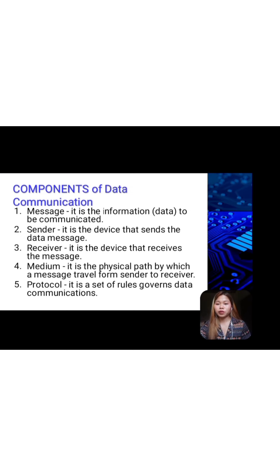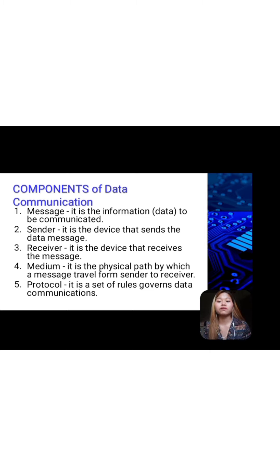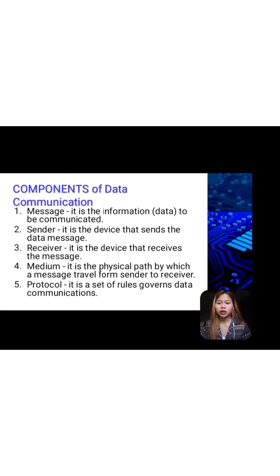Components of data communication: first is message — it is the information or data to be communicated. The second is sender — it is the device that sends the data message. Third is receiver — it is the device that receives the message. Fourth is medium — it is the physical path by which a message travels from sender to receiver. Fifth is protocol — it is a set of rules that governs data communication.